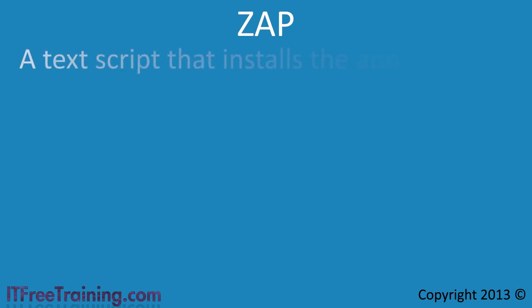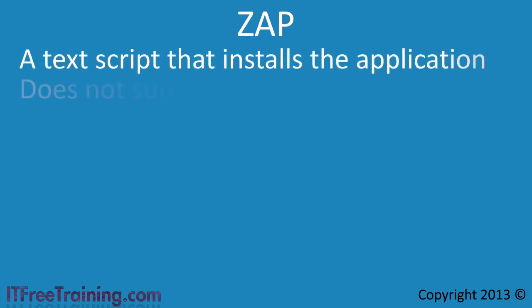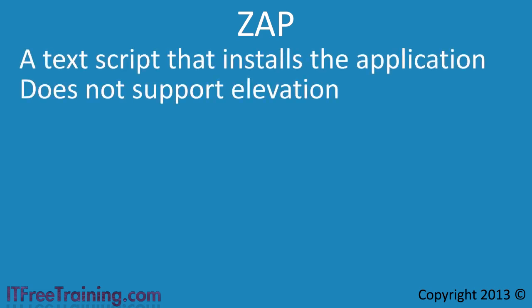MSI packages have been around for a long time, and as such a large amount of software has been released in MSI format. If you are not able to get an MSI file for your application, you can create a text file called a zap file. The zap file is a script that will install the software. There are some limitations to zap files, and for these reasons they are not often used.